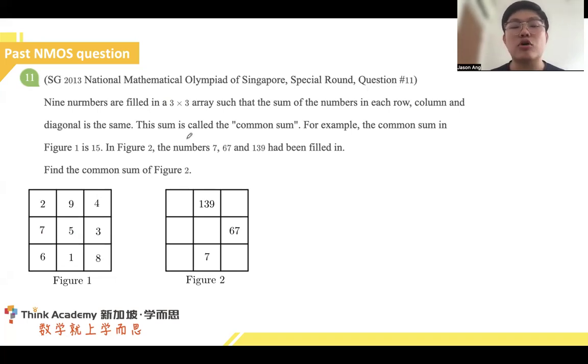So it's basically a very similar concept based on the magic square. Given that this sum is also called the common sum. For example, the common sum of figure one is 15. If we add up any of the common rows or columns or diagonals, it will still give us the same. Now, in figure two, the numbers 7, 67, and 139 have been filled in. But that is enough for us to find the common sum. Do you already notice that it looks very similar to what we have just talked about in our golden triangle?